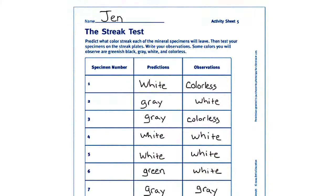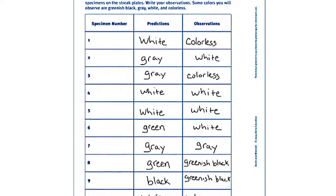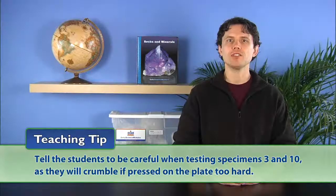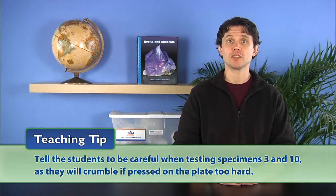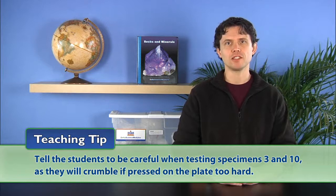One and three are colorless. Two, four, five, six, and ten are white. Seven is gray. And eight and nine are greenish black. Tell students to be careful when testing specimens three and ten as the specimens will crumble if pressed on the plate too hard.